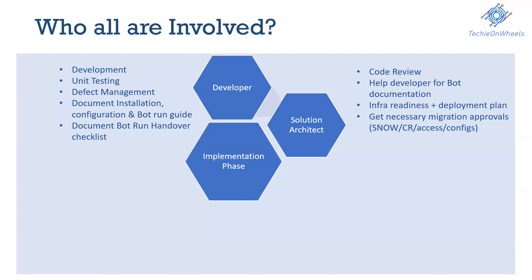Another activity, which again depends on the organization, is for the solution architect to obtain the necessary migration approvals — raising the SNOW ticket or the CR, looking into the accesses, or getting configurations done in the production environment. In some organizations, a server migration needs to go through a proper ticketing process before moving the bot from one server to another — say from development to UAT, or UAT to pre-prod or prod. This should ideally be handled by the solution architect, sometimes in collaboration with the BA or PM.